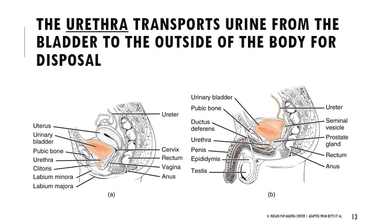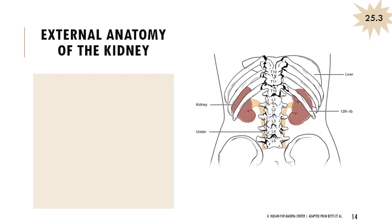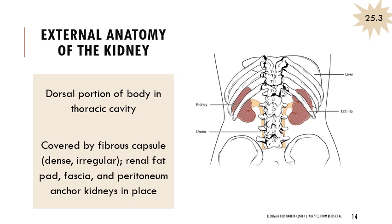The urethra transports urine from the bladder to outside the body. In people with vulva, it's much shorter; in people with penises, it's much longer and interacts with the reproductive system, whereas in people with vulva it's separate. The kidney is located on the dorsal portion of the body in the thoracic cavity — on the lower back — and is covered by fibrous material, a fat pad, fascia, and peritoneum, anchoring it nicely in place.